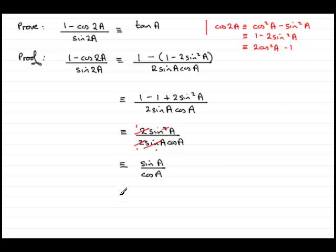And what is sine a over cos a? Sine of any angle over cosine of the same angle is always tan of that angle. In this case, tan a. Tan a is what we had to prove.